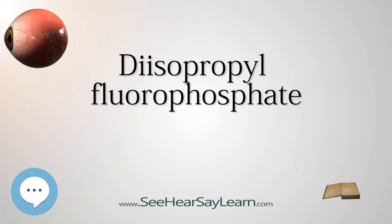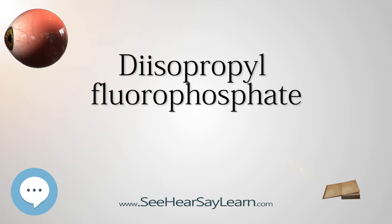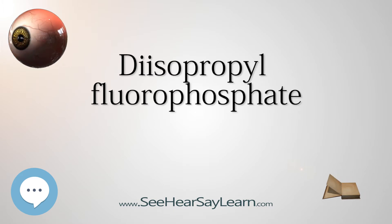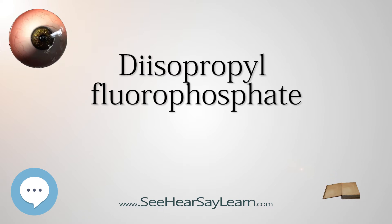If the enzyme is inhibited, acetylcholine accumulates and nerve impulses cannot be stopped, causing prolonged muscle contraction. Paralysis occurs and death may result since the respiratory muscles are affected. DFP also inhibits some proteases, making it a useful additive for protein or cell isolation procedures.